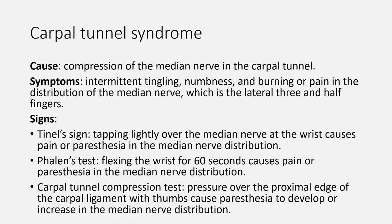There are also some signs that can be used to confirm the diagnosis. These signs include: Tinel's sign — tapping lightly over the median nerve at the wrist causes pain or paresthesia in the median nerve distribution. Phalen's test — positive when flexing the wrist for 60 seconds causes pain or paresthesia in the median nerve distribution. Carpal tunnel compression test — positive when pressure over the proximal edge of the carpal ligament with thumbs causes paresthesia to develop or increase in the median nerve distribution.